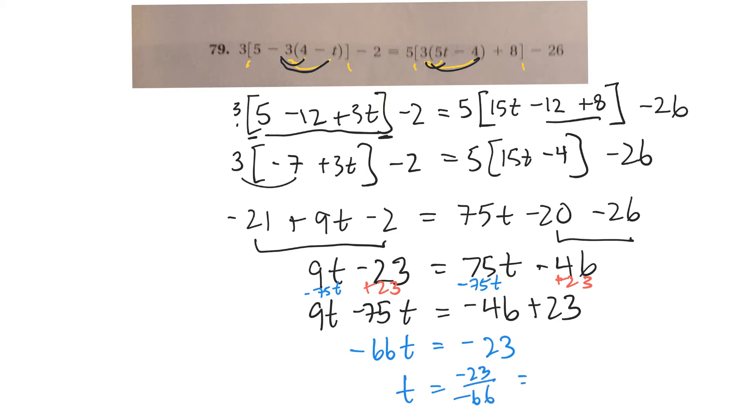So then if I divide both sides by negative 66, I get t is equal to negative 23 over negative 66. Or the two negatives will cancel, so it'll be 23 over 66. Now, that's a big question. And something like that, I'd like for that number to come out to like 2 or 1 half. It didn't come out to a real nice fraction. So I'm wondering if I did anything wrong up top. Let me just check.